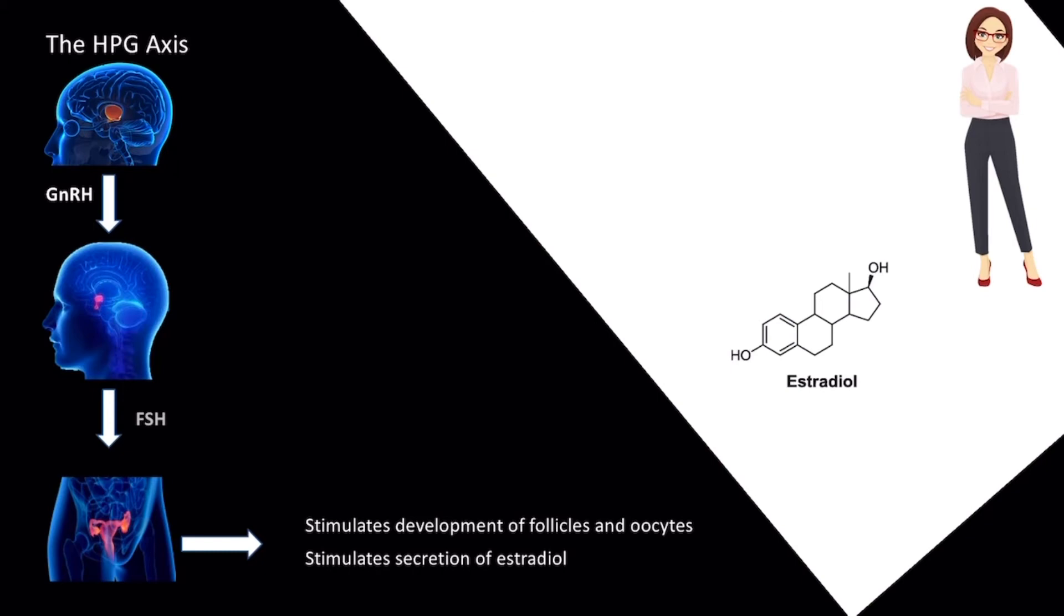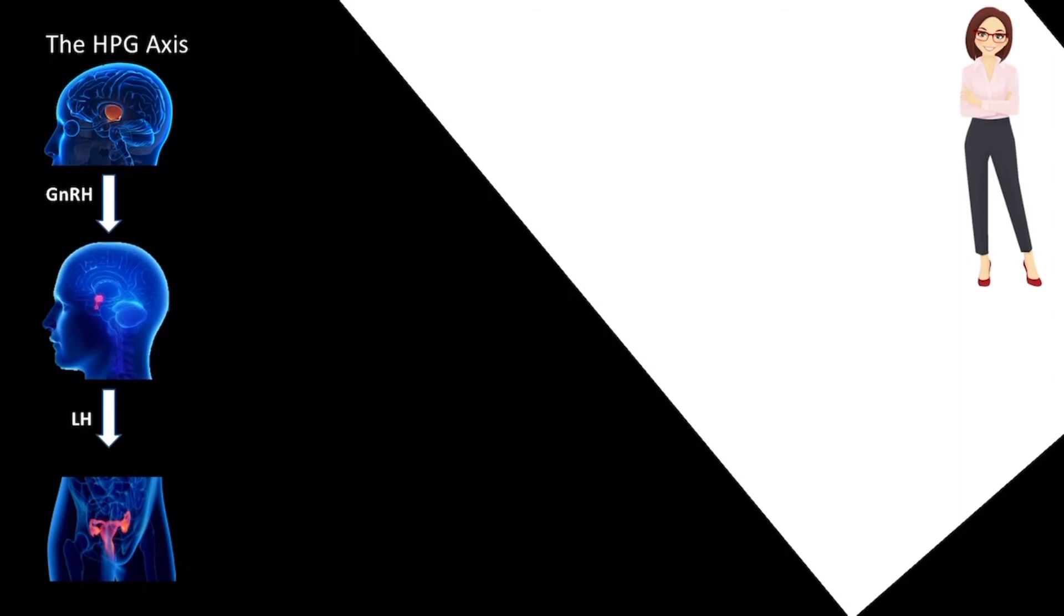Meanwhile, LH does a few things. First, LH acts on the ovaries to trigger ovulation. Ovulation occurs following an event called the LH surge. This is what ovulation tests focus on when a couple attempts to determine the best time to conceive a child.